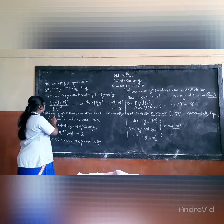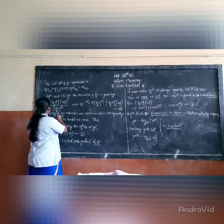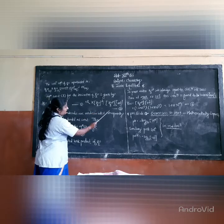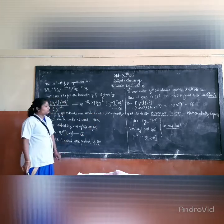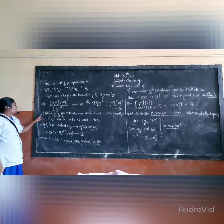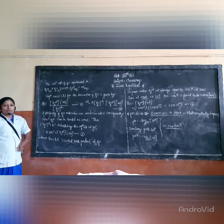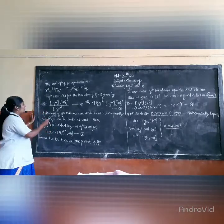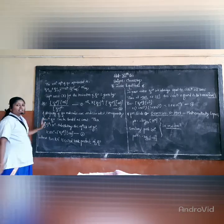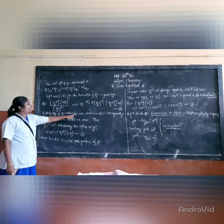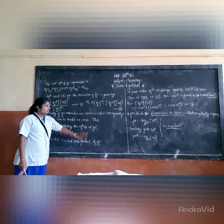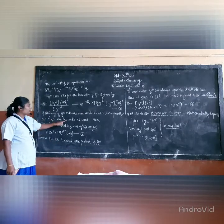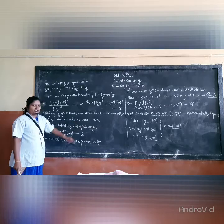Cross-multiplying, K into [H2O]² is equal to [H3O⁺] into [OH⁻]. This is equation number two. Since the majority of water molecules are undissociated, the concentration of water can be treated as constant.